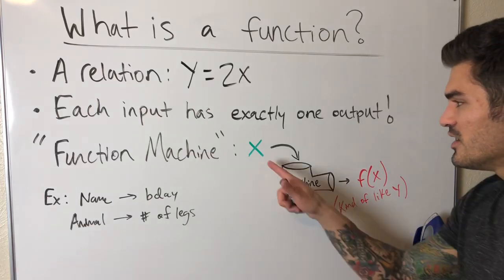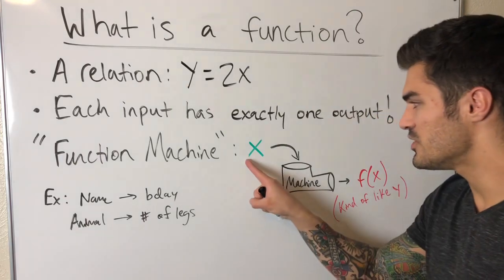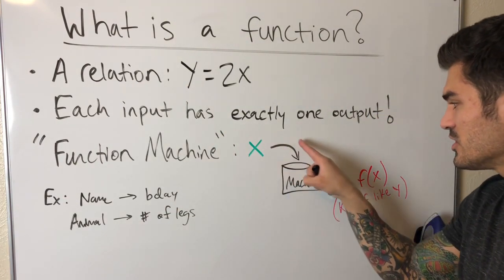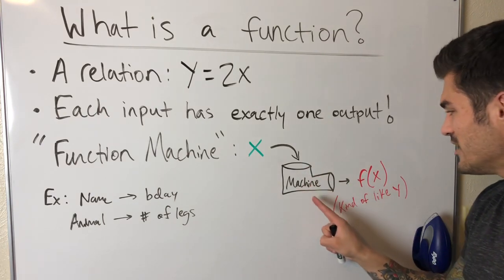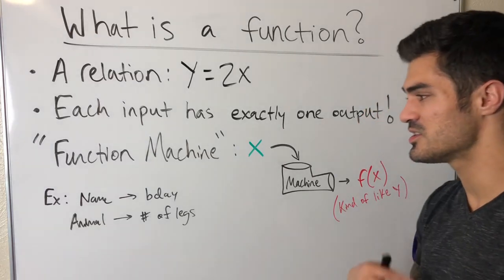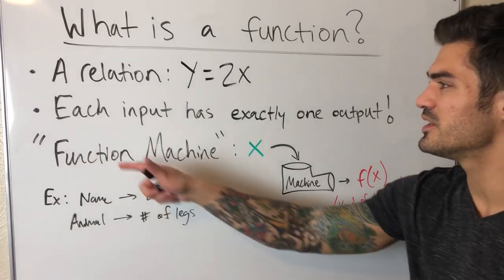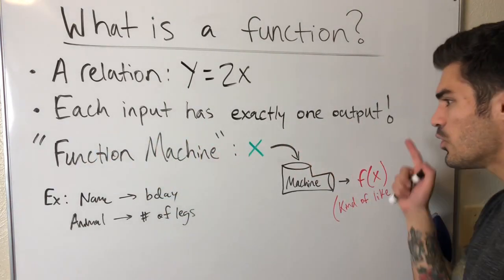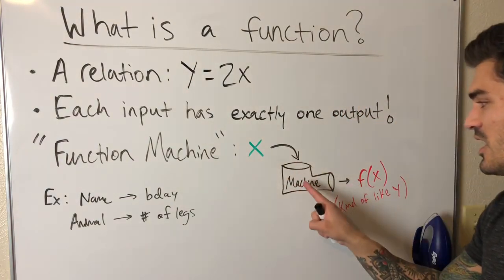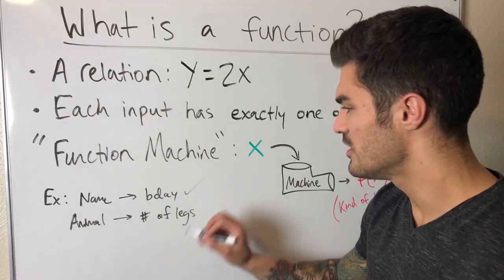For example, imagine a machine that takes in somebody's name and spits out their birthday. The input is a person's name, the machine analyzes it, and outputs their birthday. This is a function because each input has exactly one output — you can't have more than one birthday; each person has one.